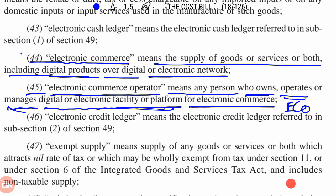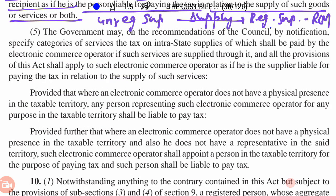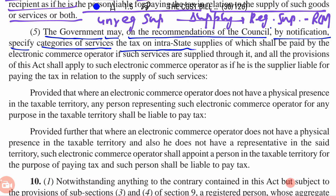So Section 2, Clause 44 and 45 — we are clear. Now Section 9, Subsection 5: The government may, on the recommendation of the council, by notification, specify that tax on certain supplies of services shall be paid by the Electronic Commerce Operator. So here we are talking about the government, after the council's recommendation, by notification, specifying which categories of services to specify.